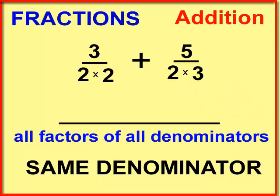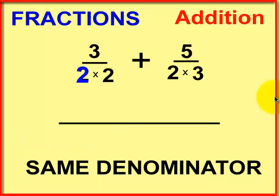Let's build our all factors of all denominators new denominator. So there's a two. I'm going to drag it down to the new place. There's another two. I'm going to drag that one down. So I got both of these factors. These guys are taken care of.